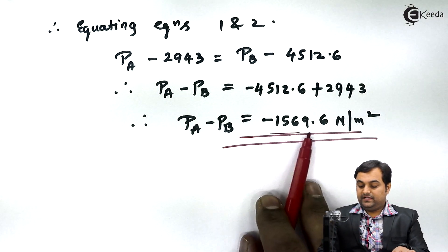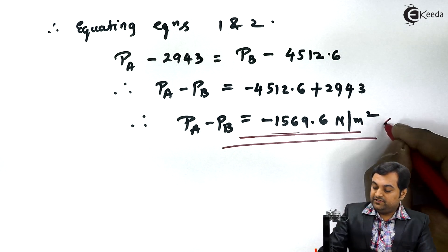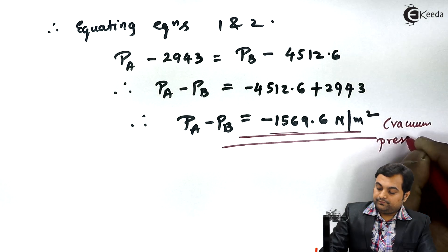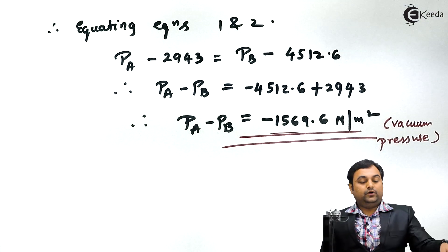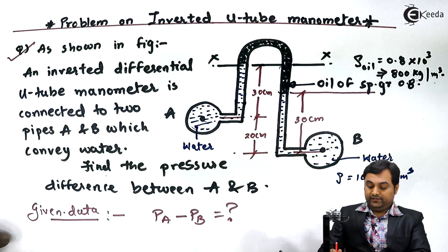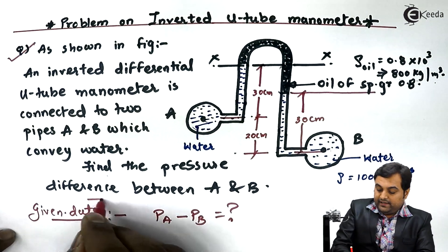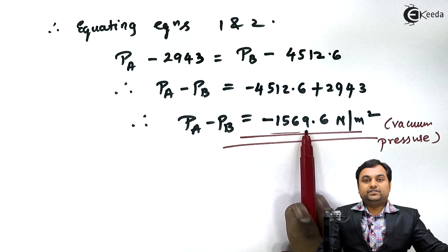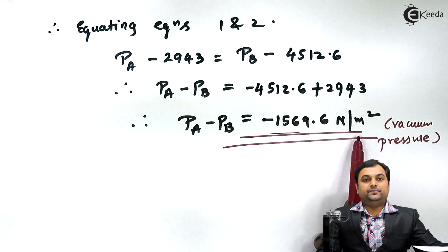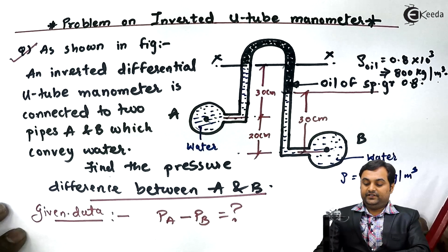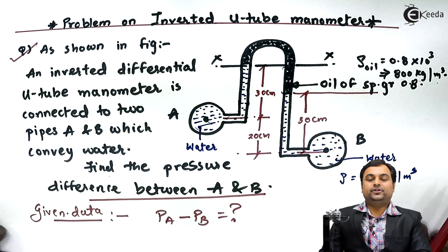An important conclusion: since the answer for the pressure difference is negative, it means it is vacuum pressure. The pressure difference between A and B is −1569.6 Newton per meter square, which is negative, therefore it is vacuum pressure. With this we have completed the problem on the inverted U-tube manometer. Thank you.